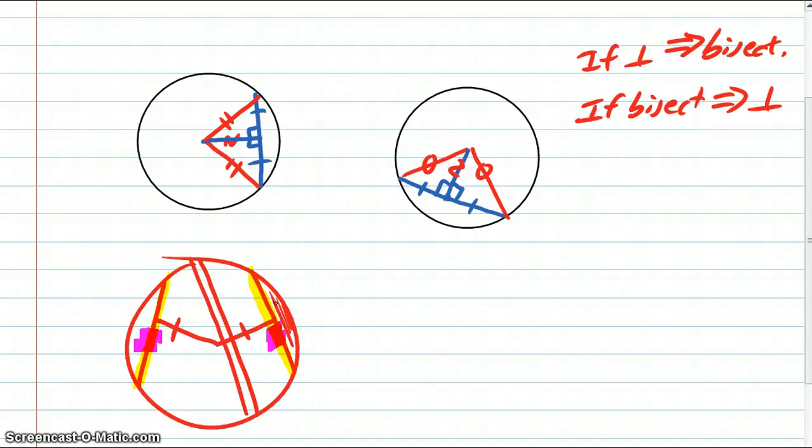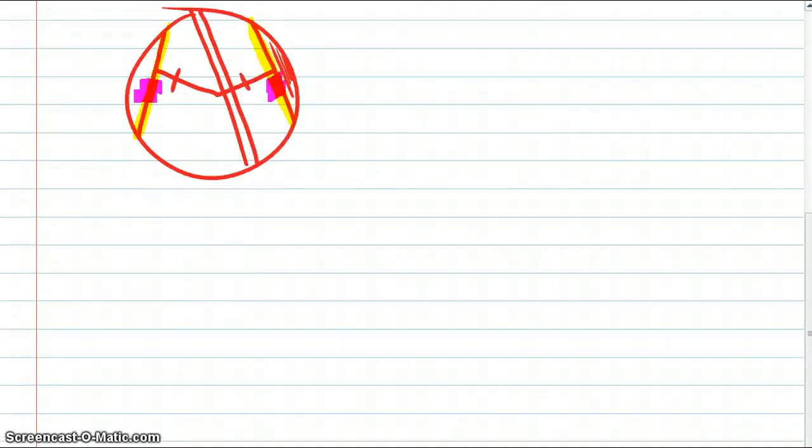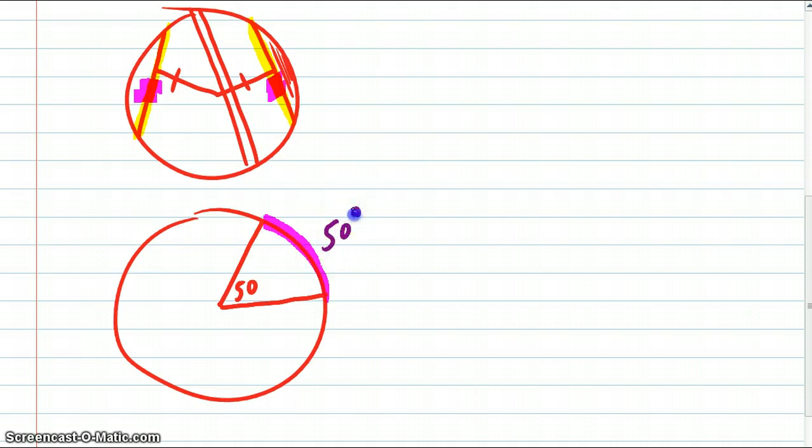We started to talk about arcs and the relationship between arcs and angles. And so one of the highlights there was this idea of a central angle. If you have an angle coming from the center, that's maybe 50 degrees. We said that the measurement of the arc would be exactly the same size. So it would be 50 degrees as well. So 50 degrees central angle, 50 degree measurement of the arc.